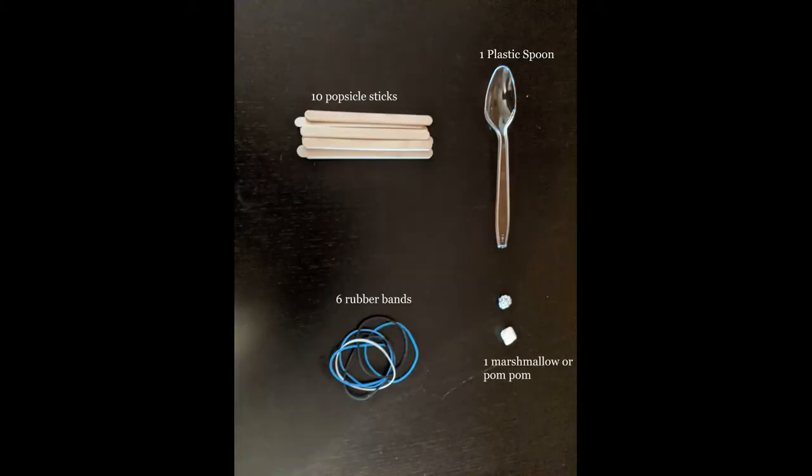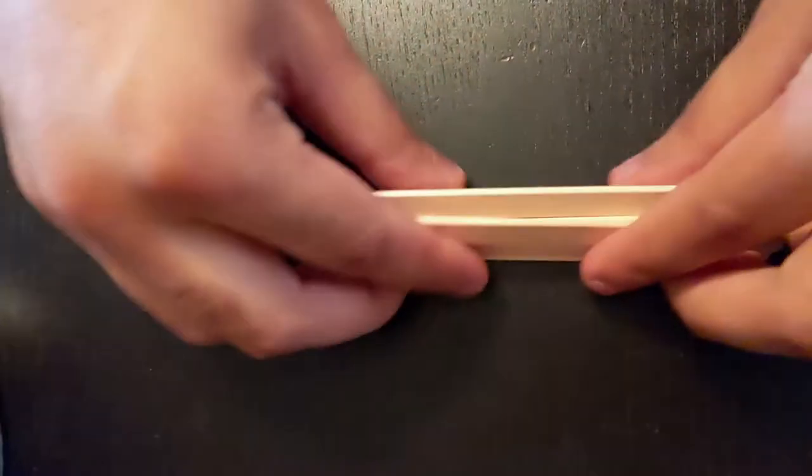To start, let's gather our materials to build our catapult. You will need ten popsicle sticks, one plastic spoon, six rubber bands, and then something really small and soft to launch like a marshmallow, a cotton ball, a pom-pom, or a rolled up piece of paper will do just fine. Let's get started.